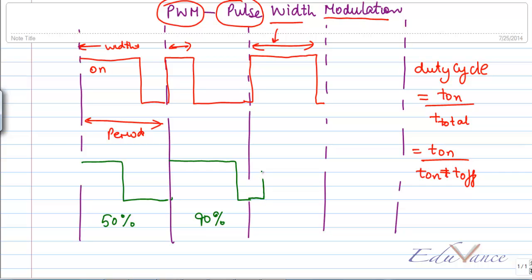You could even have something like this and still say that this is 90%. Now how do you implement PWM using digital components? So let's look at that.